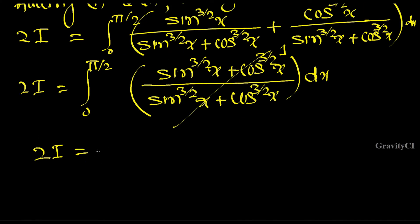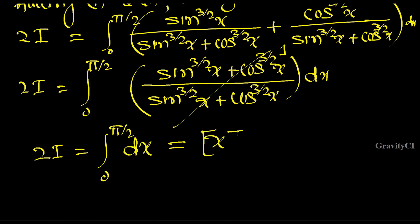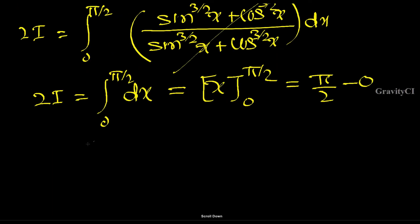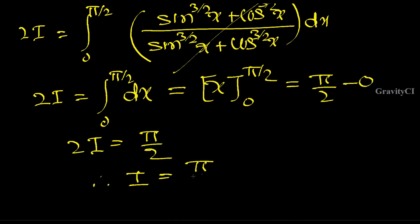The numerator and denominator cancel, so 2I equals the integral from 0 to π/2 of 1 dx. The integration of 1 dx is x, and putting in the limits gives π/2 minus 0. So 2I equals π/2, therefore I equals π/4. Hence proved.